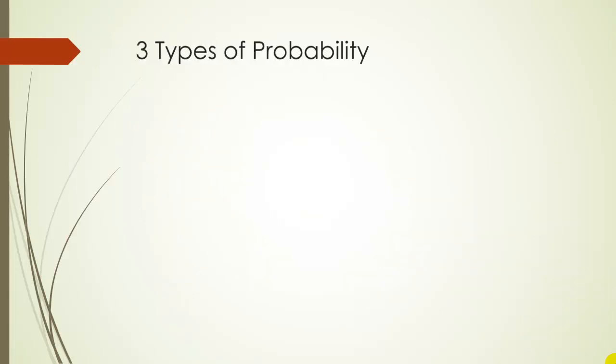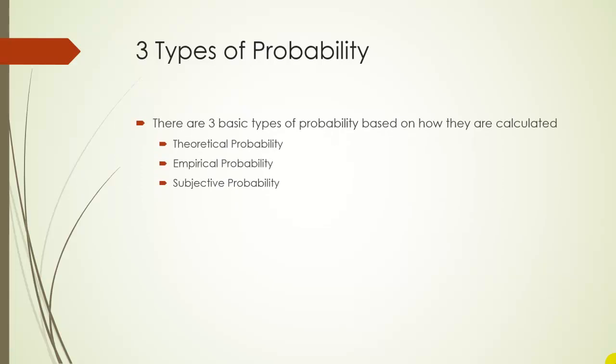So there are three basic types of probability. There are theoretical probabilities, empirical probabilities, and subjective probabilities. And even though we're going to treat these the same in terms of the calculations we'll do with them, how they are actually calculated is different.